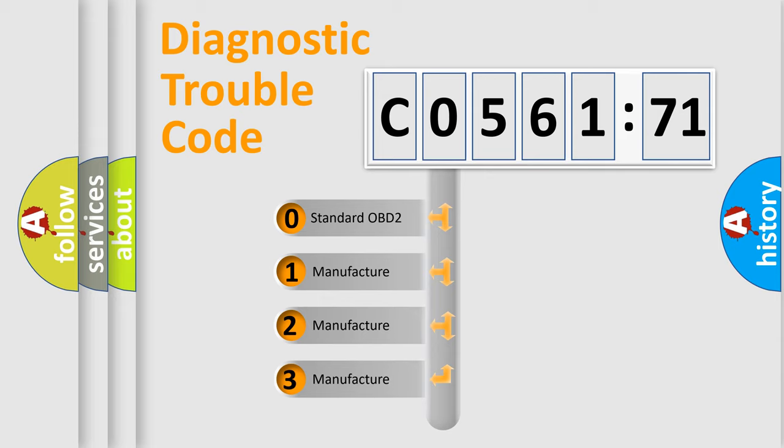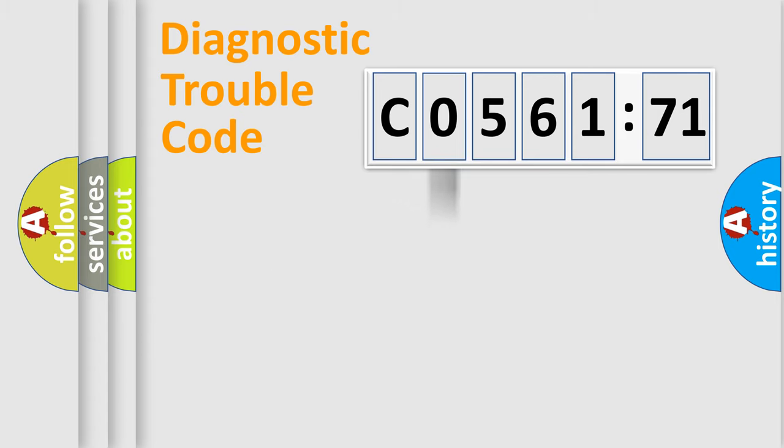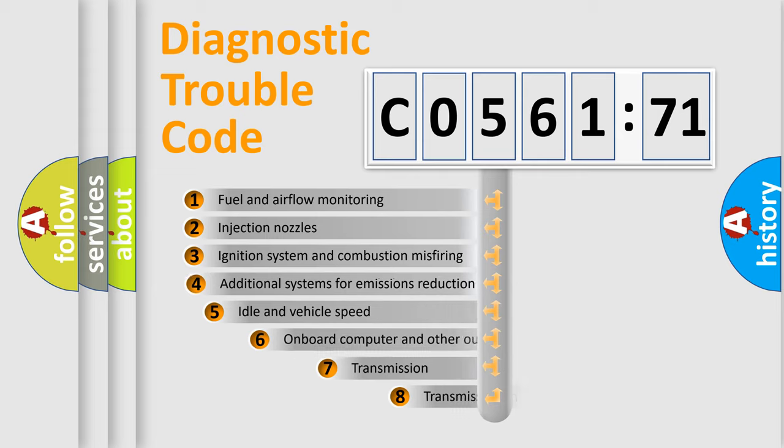If the second character is expressed as zero, it is a standardized error. In the case of numbers 1, 2, 3, it is a more prestigious expression of the car specific error.